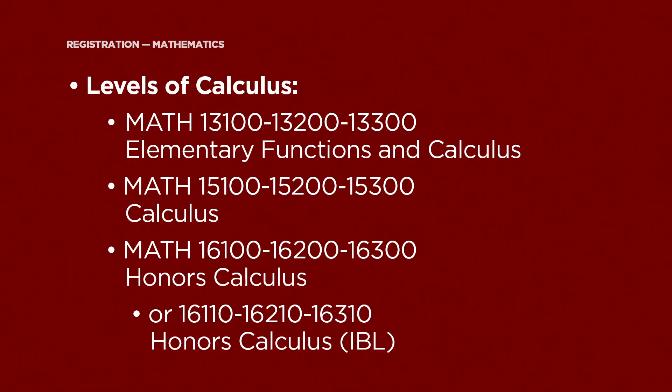If you do plan to take calculus, here is the information on the classes we offer. We have three levels of calculus at the University of Chicago: the math 130s, the math 150s, and the math 160s. All of our calculus courses require students to gain some understanding of the concepts and theory underlying the subject, but the first two sequences also emphasize applications and are generally taken by students whose primary interests are in areas besides mathematics. The math 150s is our standard sequence, and the math 130s is our sequence for students who may need some pre-calculus reinforcement.